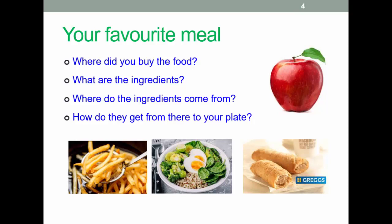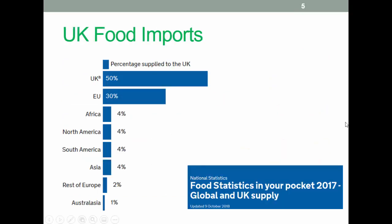Looking at UK food imports, based on farm gate value of unprocessed food in 2019, the UK supplied just over 55% of the food we actually consume. The leading foreign supplier of food consumed in the UK comes from countries in the European Union, as you might expect. Africa, Asia, and North and South America each contribute about 4% of the food consumed in the UK. The three largest value imported commodity groups at 2019 prices are fruit and vegetables, meat, and beverages.